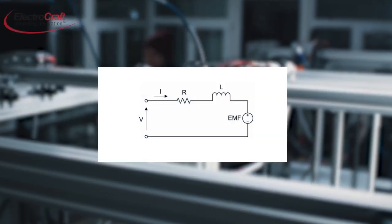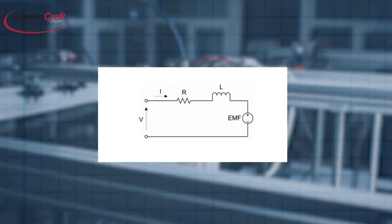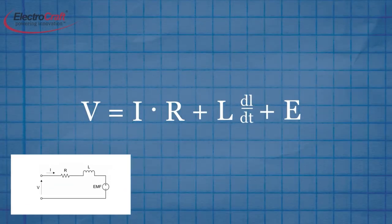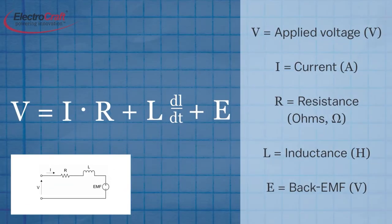Let's look at a typical brushed DC motor circuit. Here, the applied voltage equals the voltage drop across the resistance R and the inductor L, plus the back EMF voltage.